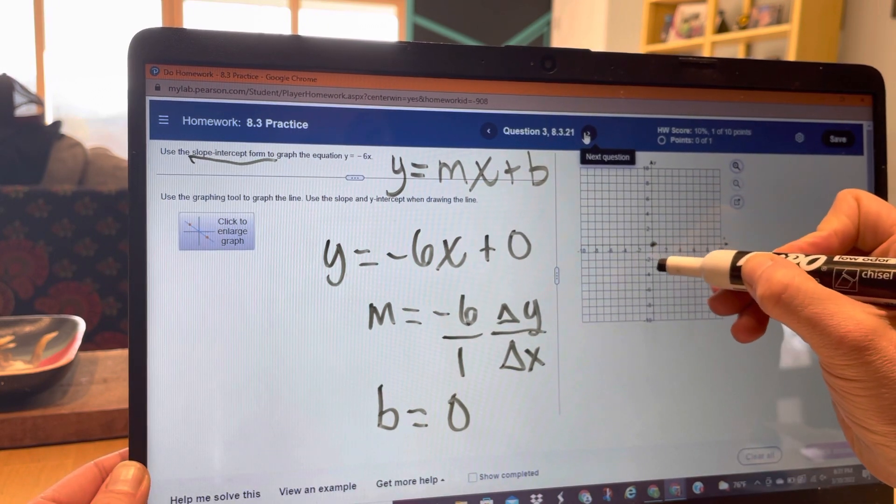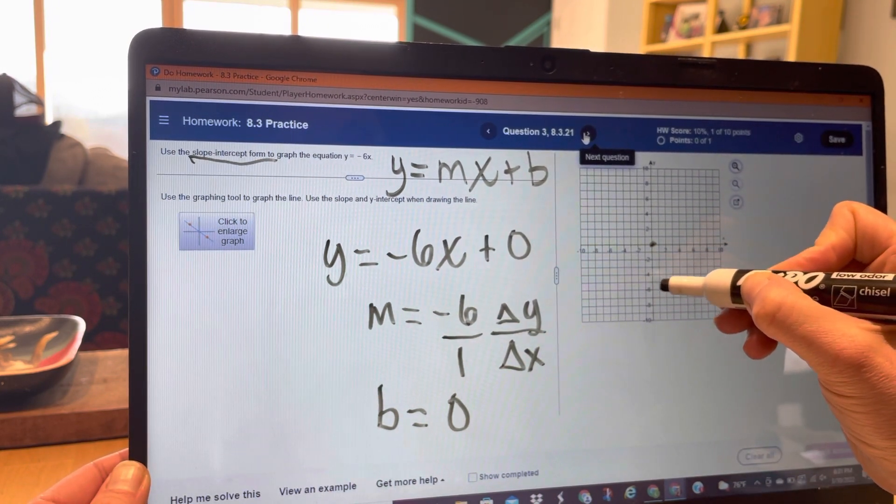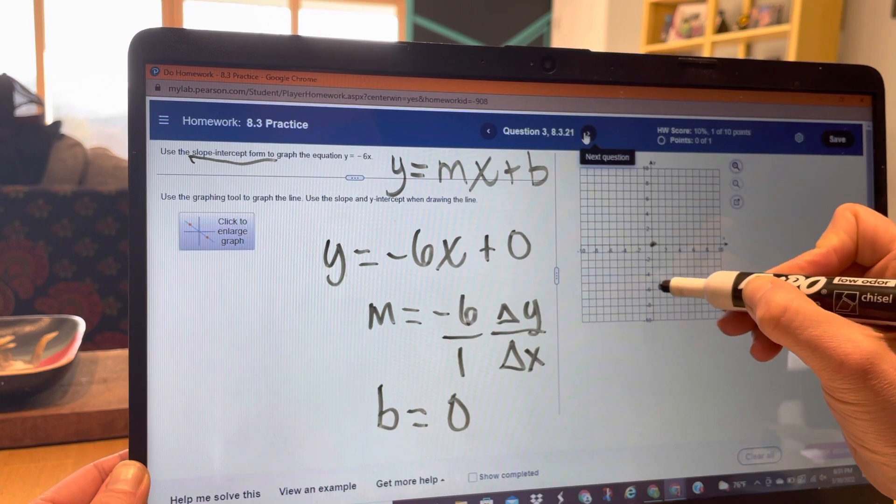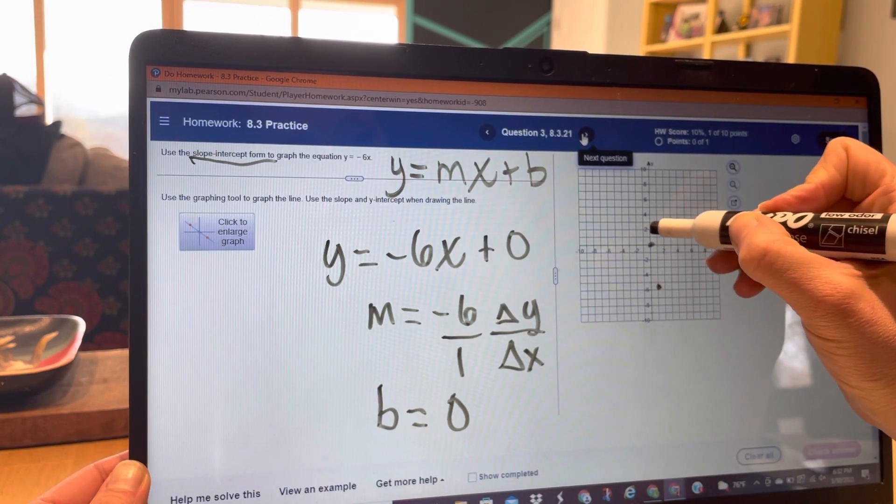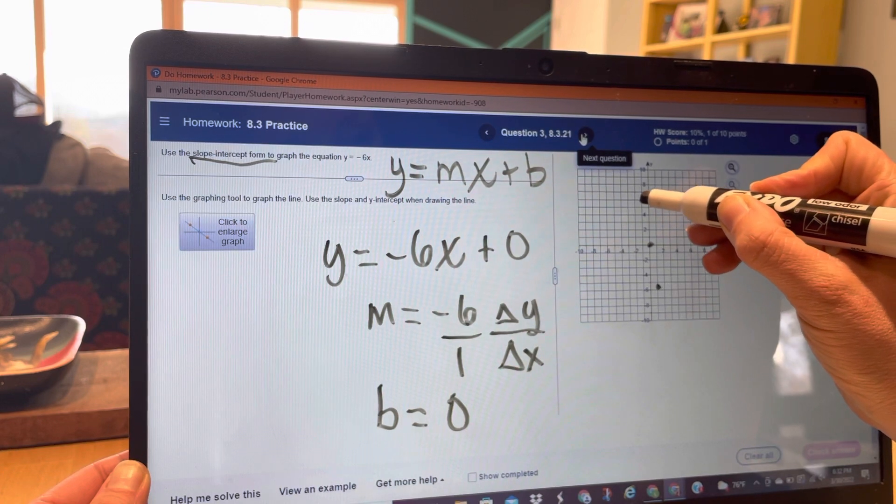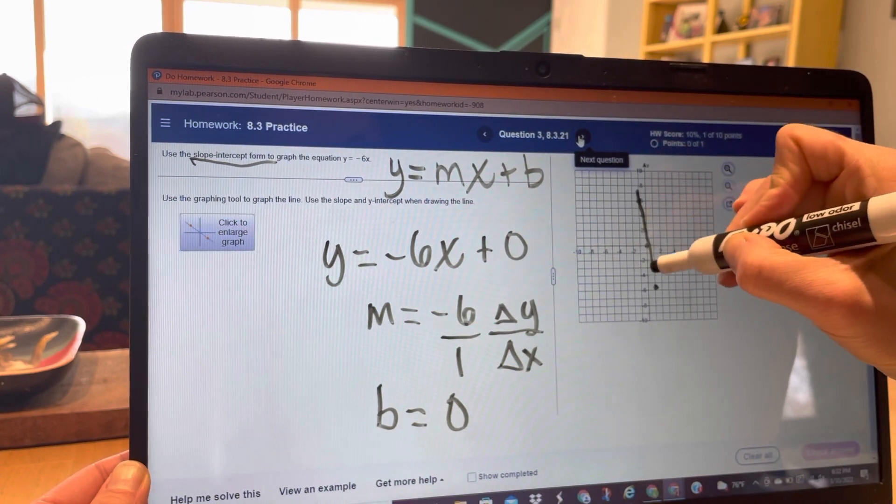So I'm going down 1, 2, 3, 4, 5, 6. Right 1. You can repeat that, down 6, right 1. Or you can do the opposite, up 1, 2, 3, 4, 5, 6. Left 1. So there's my line.